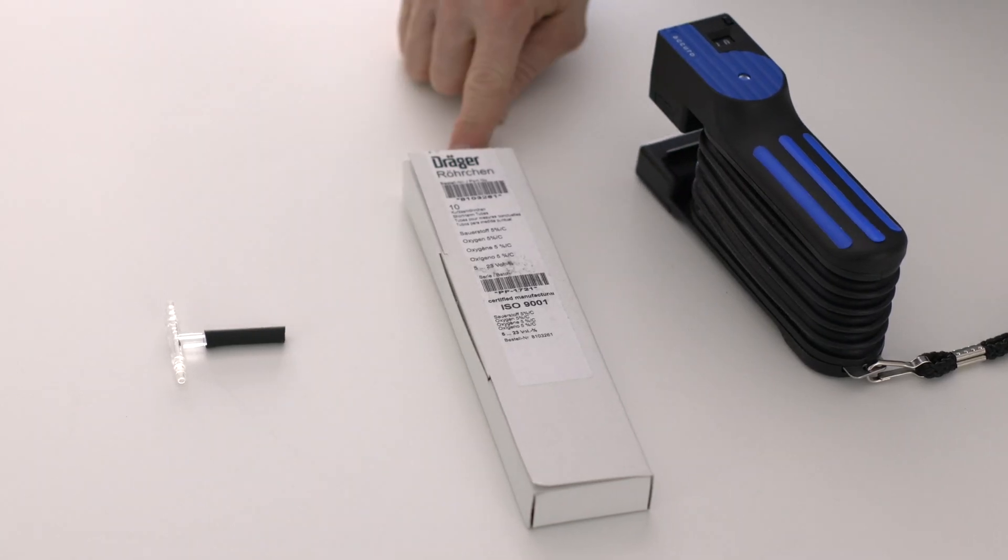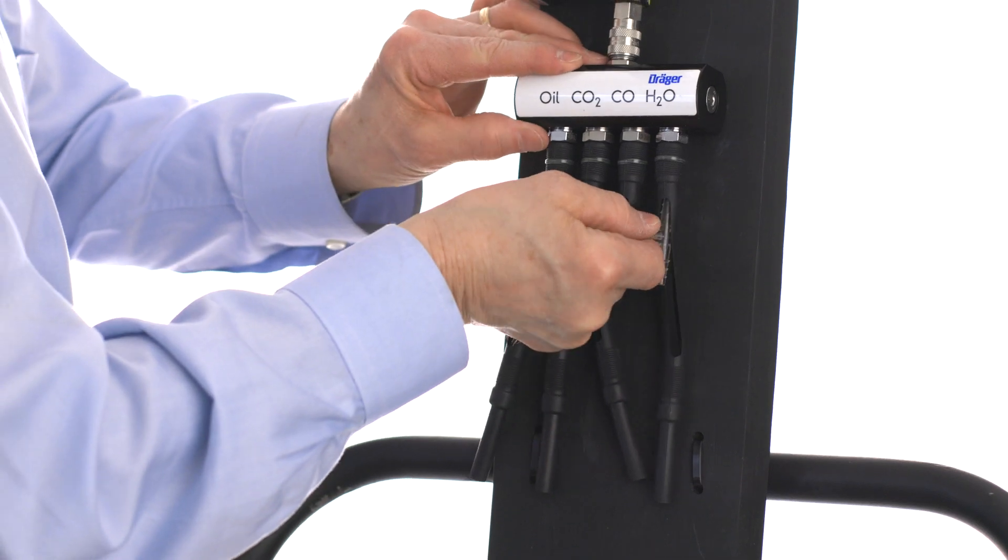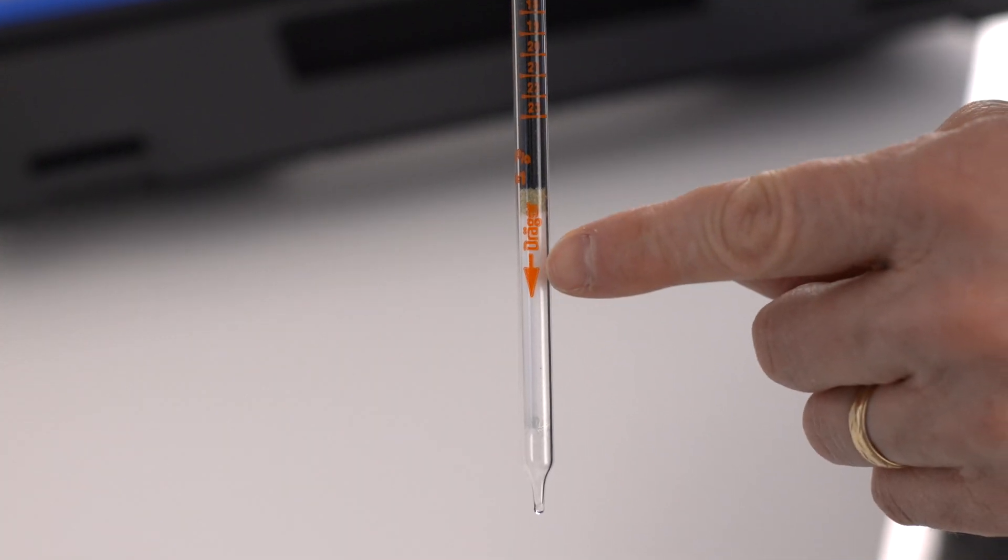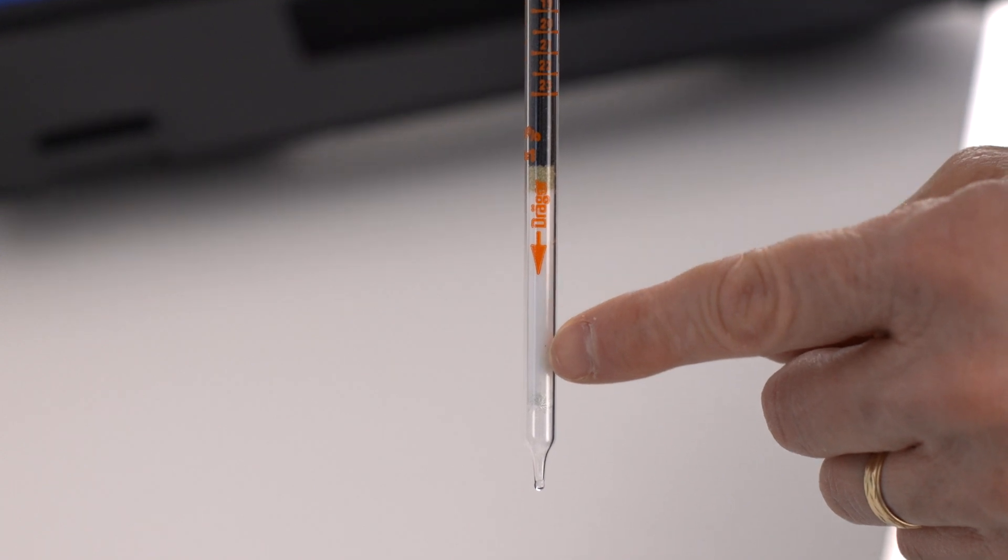The oxygen content of the air can also be measured with the Aerotest using a T-piece, the oxygen 5% C-tube, and the Drager Acuro. Connect the T-piece to the H2O holder. Check the arrow on the tube, which will need to be pointed away from the T-piece when a measurement is taken.